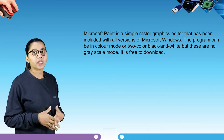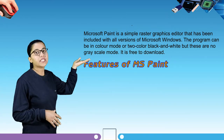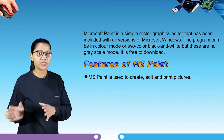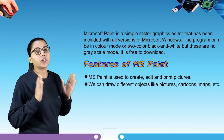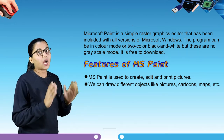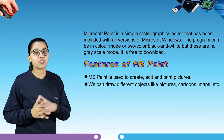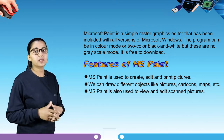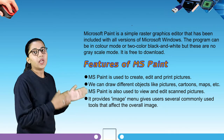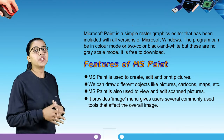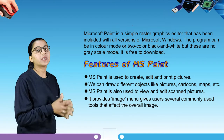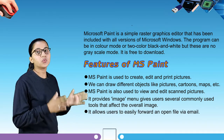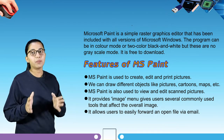Our first topic is features of MS Paint. MS Paint is used to create, edit and print pictures. We can draw different objects like pictures, cartoons, maps, etc. MS Paint is also used to view and edit scanned pictures. It provides an image menu giving users several commonly used tools that affect the overall image. It allows users to easily forward an open file via email.